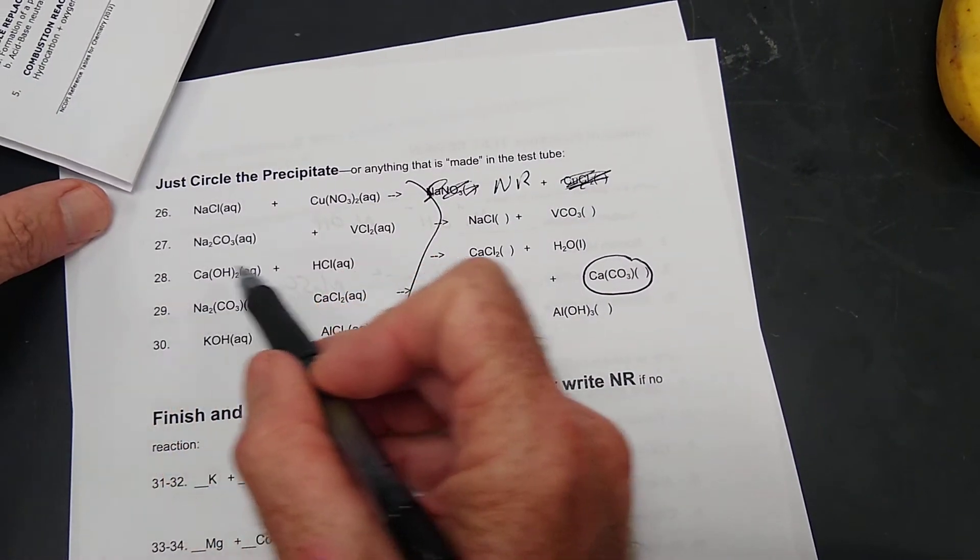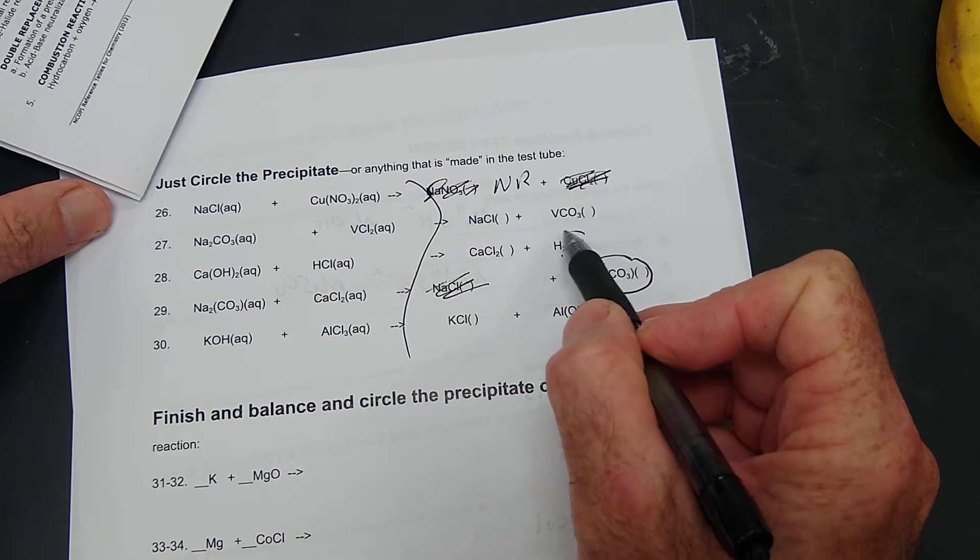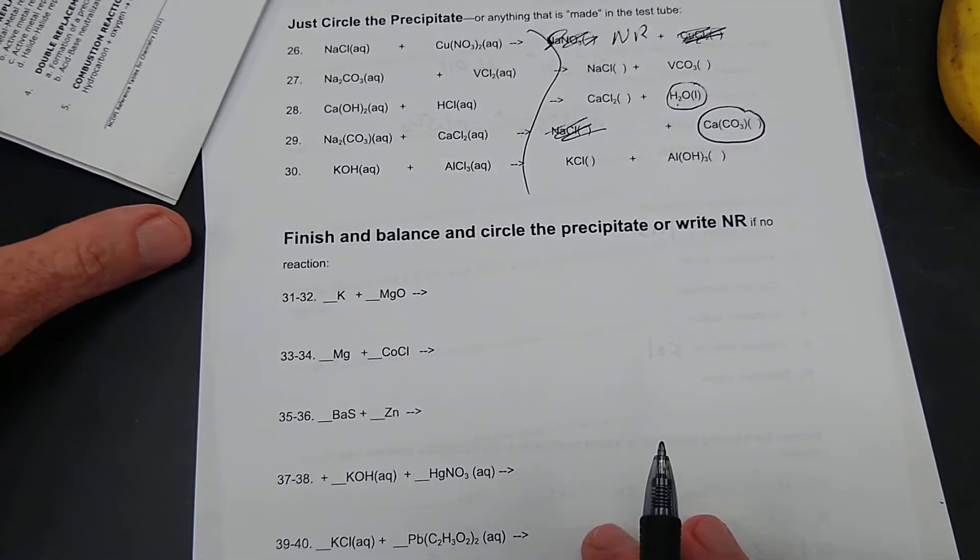Also, if you look at number 28, there's a water there. Water counts as the precipitate.